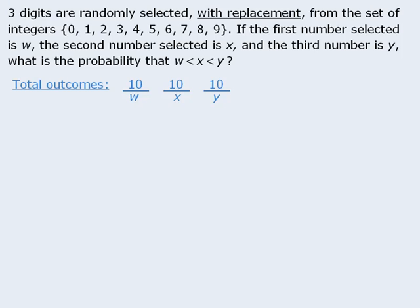By the fundamental counting principle we can multiply each stage to see that there are one thousand possible outcomes here. Now, of these one thousand possible outcomes, how many are such that the three numbers are selected in ascending order?